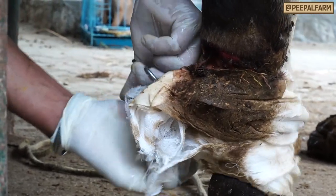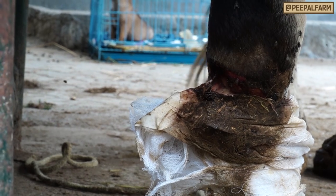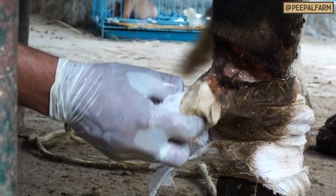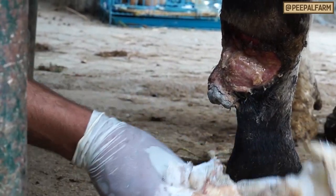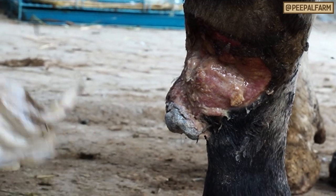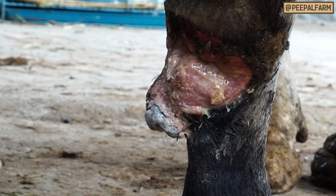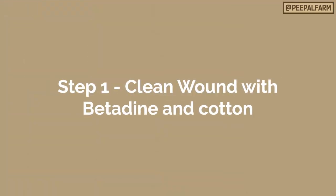So when you get a new animal, it will look like this. You will see that there is a little pus. The first step is that you have to take cotton.